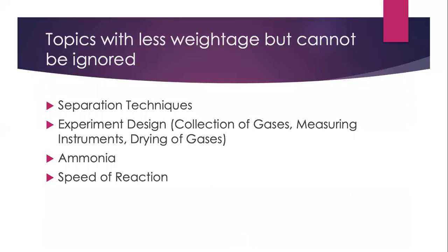The less significant topics have much less weightage but cannot be ignored, as they still carry some marks. Separation technique and experiment design in Paper 1 are not tested as heavily but still carry a range of one to three marks at times. Ammonia is already a very minor topic, so we don't expect many questions. Surprisingly, speed of reaction is one of the four topics with the least percentage in Paper 1 — but when you look at Paper 2 later, speed of reaction is more significant.